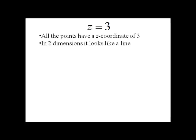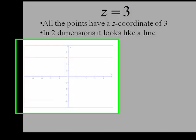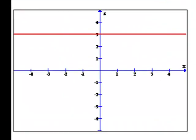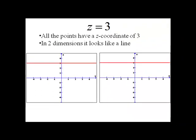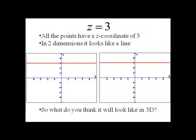So our first one will be z = 3. Let's think about what this looks like. It has all its points that have a z coordinate of three. In two dimensions it's going to look like a line. For instance, in the xz plane it's going to look like the following. In the yz plane it looks pretty similar. So the big question is what will this thing look like in three dimensions?